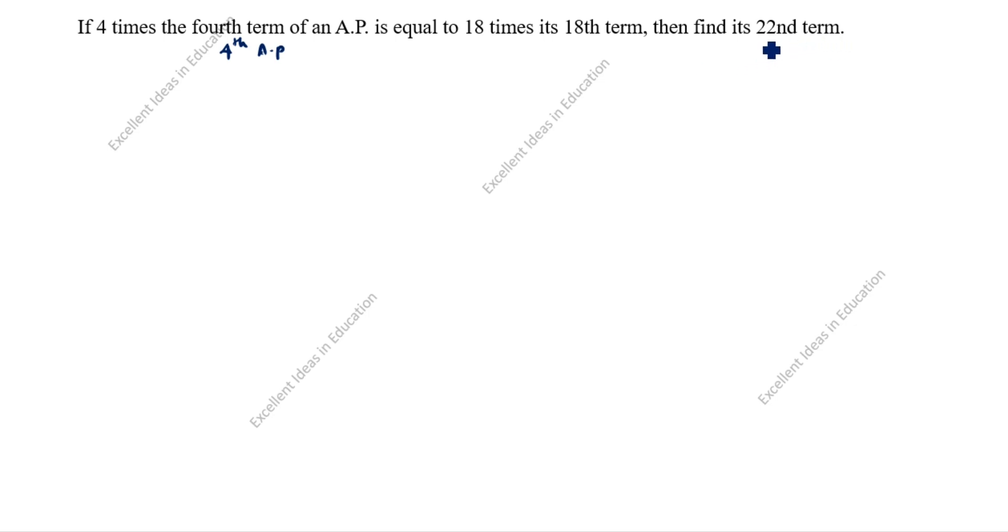So, 22nd term, a22, we need to find. What is given in this question? 4 times 4th term of an AP, so 4 times a4 is equal to 18 times 18th term, a18.